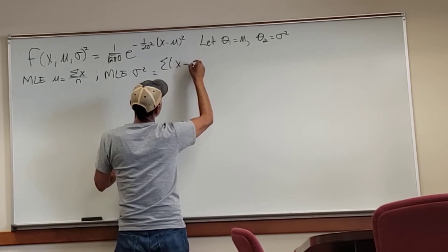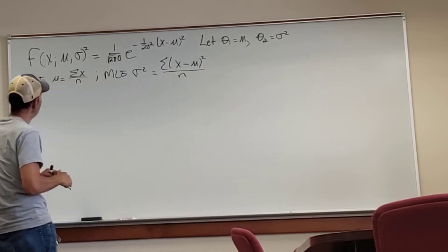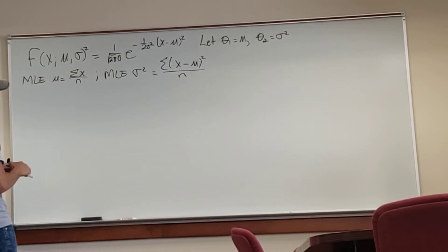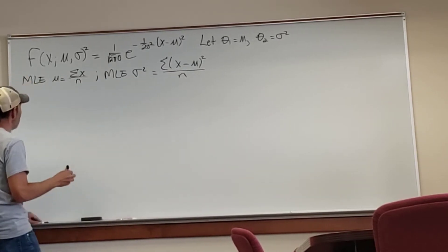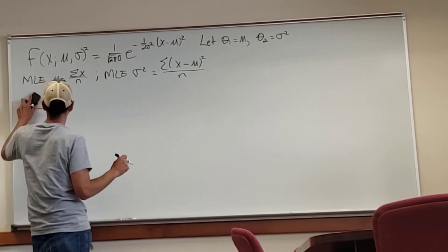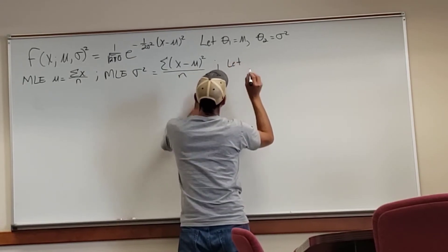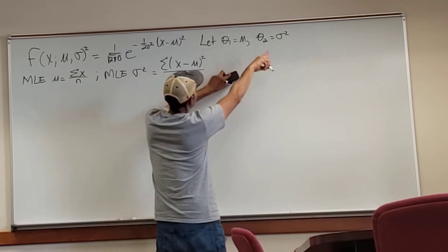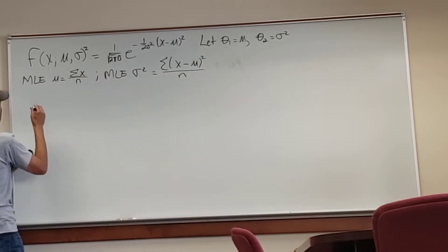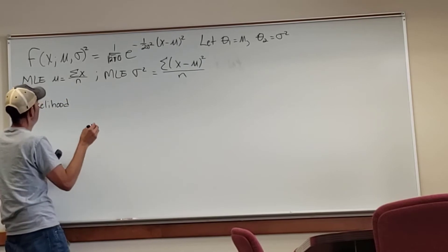So this sigma should be from i equals 1 to n, n being the population size. And it's x sub i for all the possible values minus mu squared. Mu is the population mean. So those are our estimates. We have to prove that they are the maximum likelihood estimates for the mean and the variance.